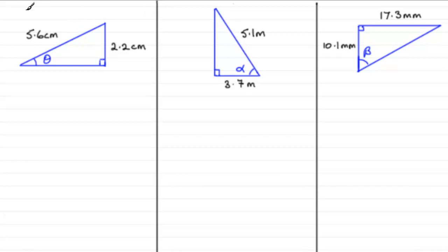The sine ratio, which is the opposite over the hypotenuse, I'll just write it briefly like this. The cosine ratio, which compares the adjacent over the hypotenuse. And the tan ratio, which compares the opposite side over the adjacent side. So we've got these three ratios.